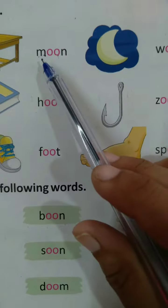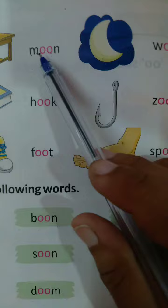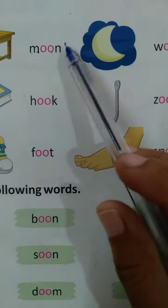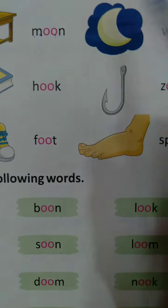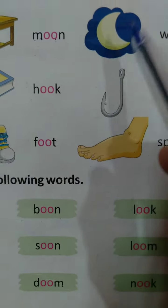Next is Moon. M double O N — Moon. Moon means Chaan.